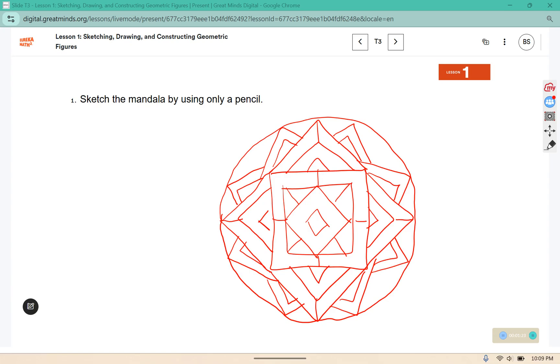When you sketch it with just a pencil, you don't have a straight edge or a compass to help create those circles or those straight lines, so it's just a sketch. It's okay if it's not perfect.